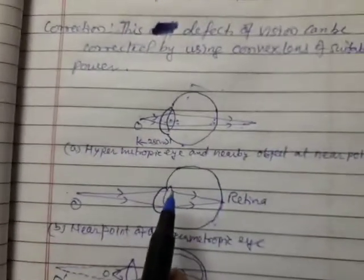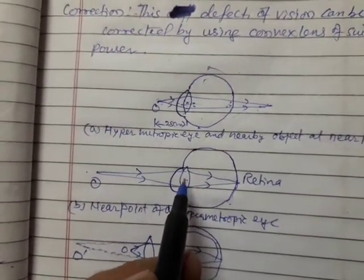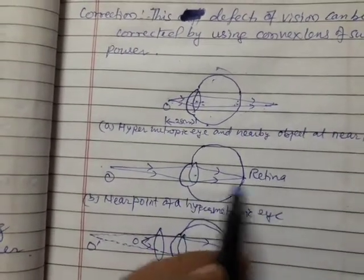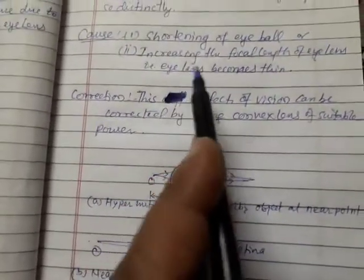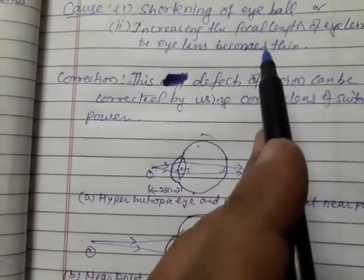So, when the eye lens becomes thin, then its focal length is more. That is called increasing the focal length of the eye lens or eye lens becomes thin.